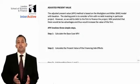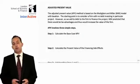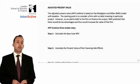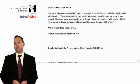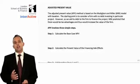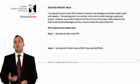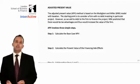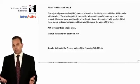Adjusted present value is fundamentally based on the principles laid down by Modigliani and Miller that we saw earlier in the course — mainly the fact that if you take out debt, the value of the business is going to increase because of that tax shield.